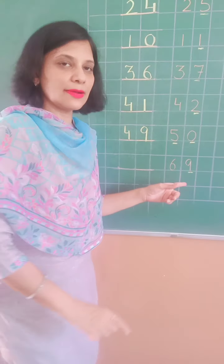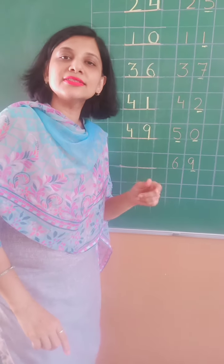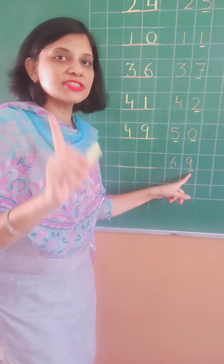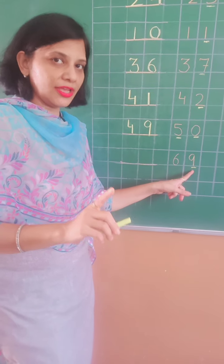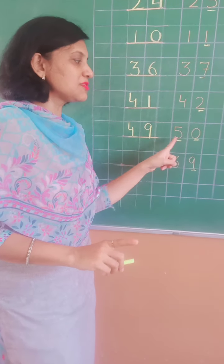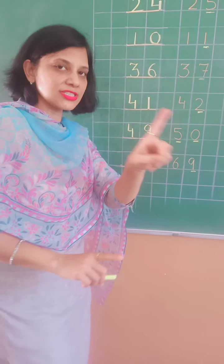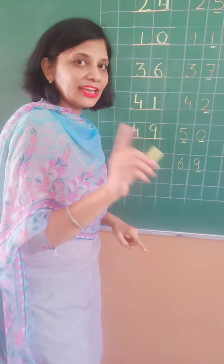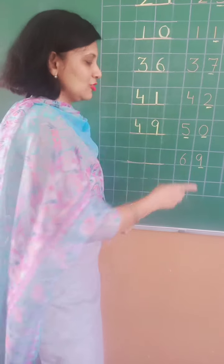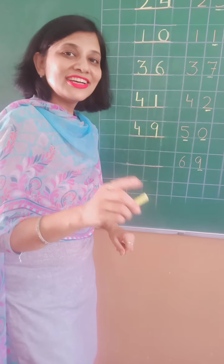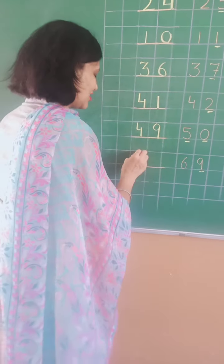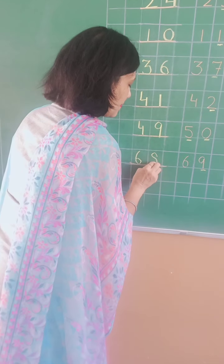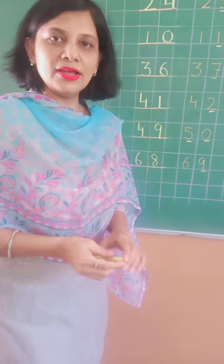Now look at the next number — that is 69. Again we will check only the first digit. Na dono numbers tab nahi lenge jab 0 tha. Yahan first digit check karenge — 9. 9 se pehle kya aata hai? 8. So 69 se pehle kya aata hai? 68. The answer is 68.